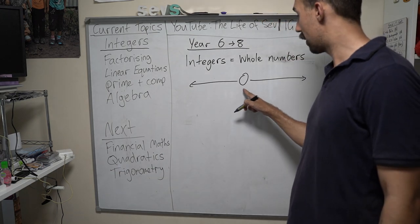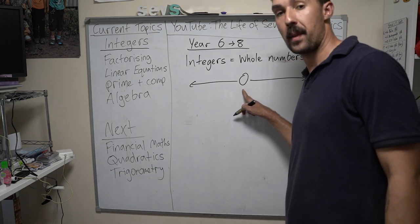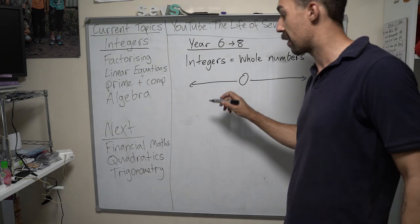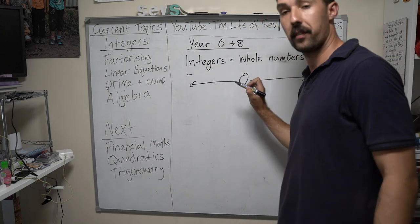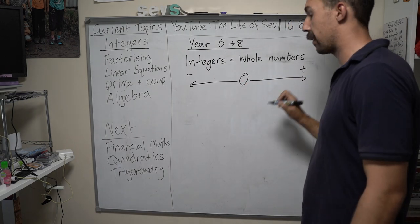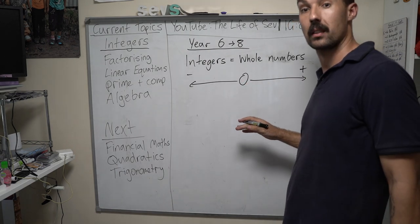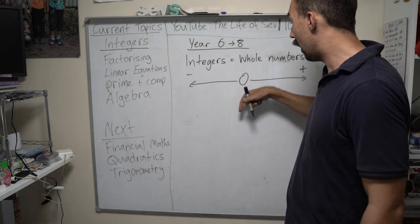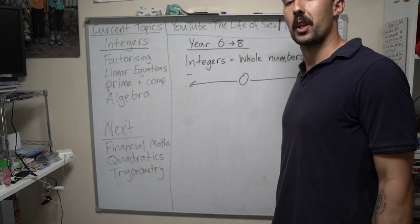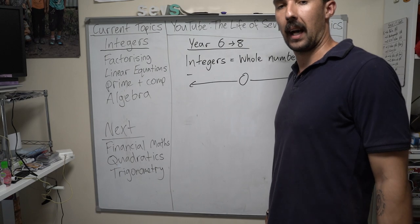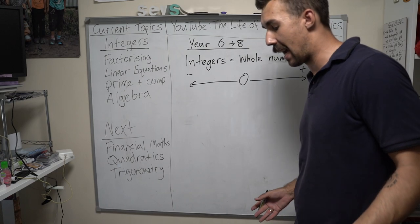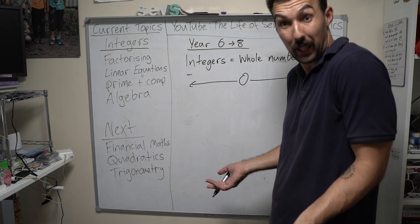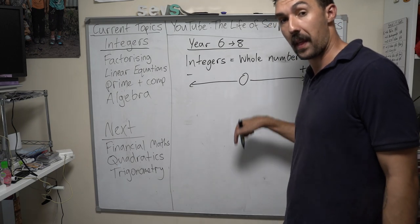So, if we've got zero, zero is in the middle. To the left is negative. To the right is positive. That's all it means. Negative means we're going to the left of zero or below zero. You know when we're reading temperature, when we have degrees Celsius, if we go below zero, they say negative four degrees. It's below zero that way.